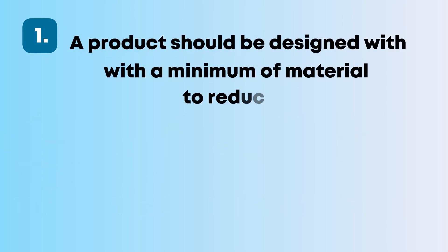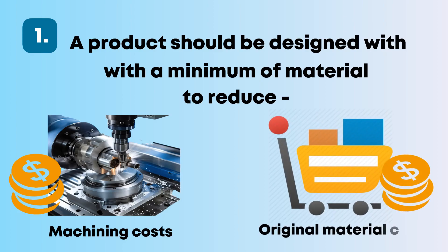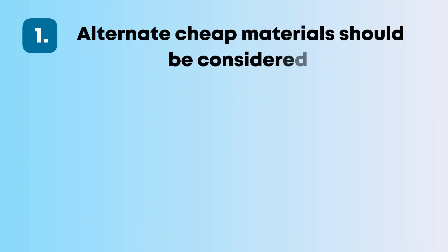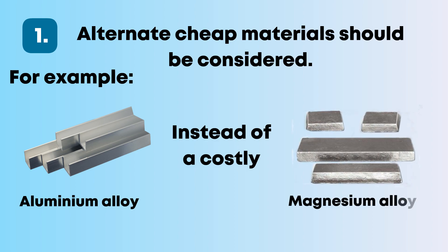A product should be designed with a minimum of material to reduce both machining costs and original material costs. Alternate cheap materials should be considered — for example, an aluminium alloy may be used for making a casting instead of a costly magnesium alloy.